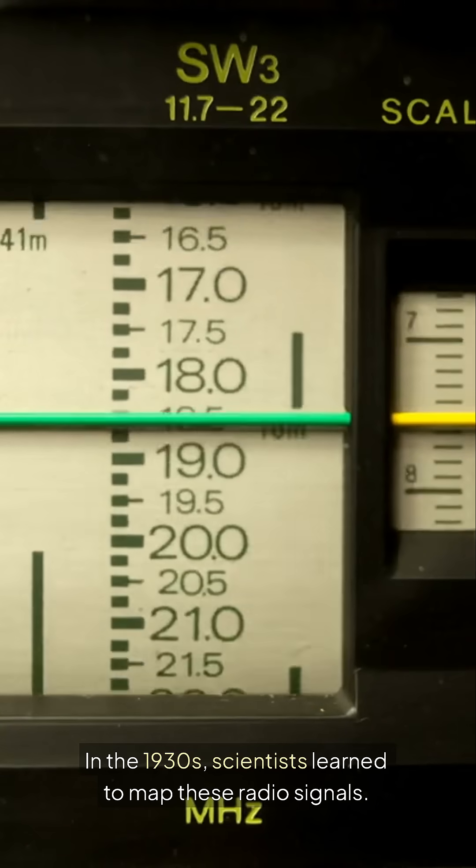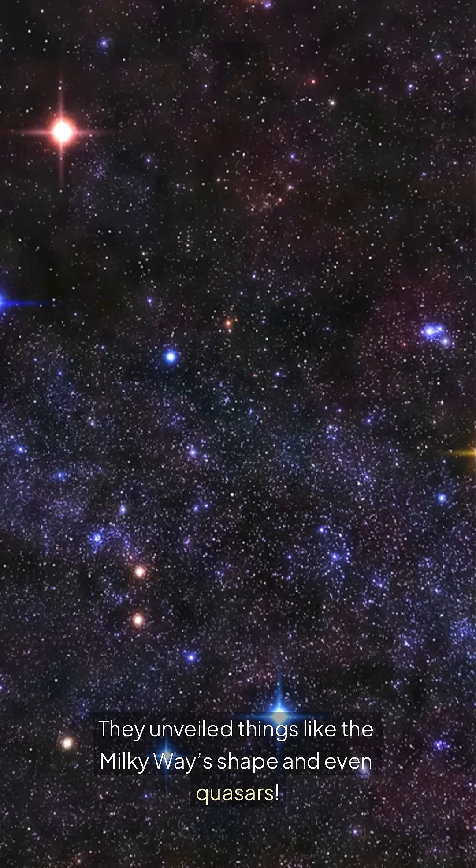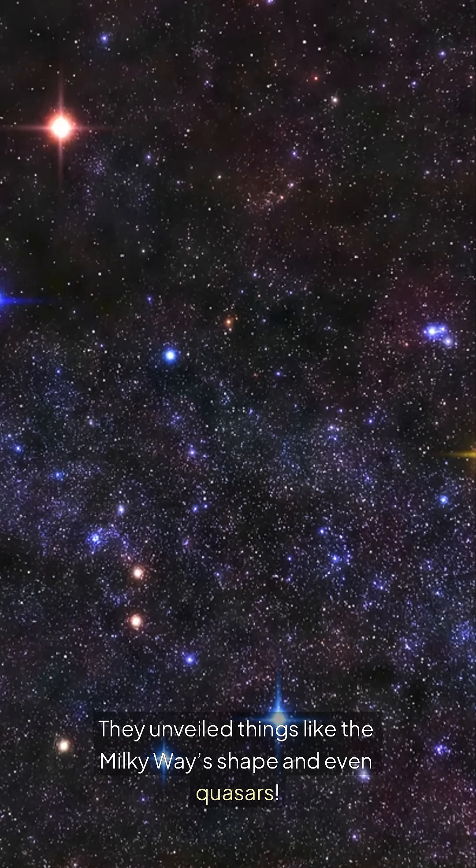In the 1930s, scientists learned to map these radio signals. They unveiled things like the Milky Way's shape and even quasars.